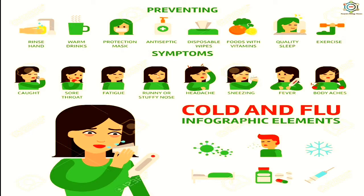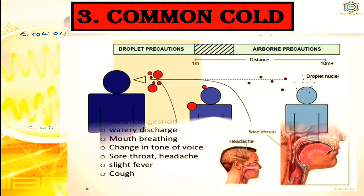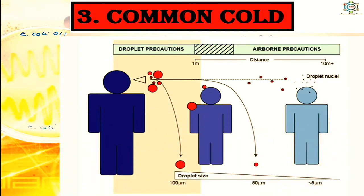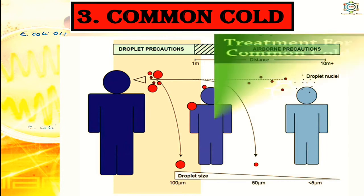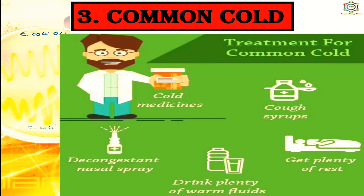Mode of transmission of common cold: viruses are transmitted directly through inhalation of droplets from coughs or sneezes of an infected person, or through contaminated objects such as utensils, books, pens, door knobs, computer keyboards and mouse. Common symptoms include nasal congestion and discharge, sore throat, hoarseness, cough, headache, and tiredness. It usually lasts for 3 to 7 days.